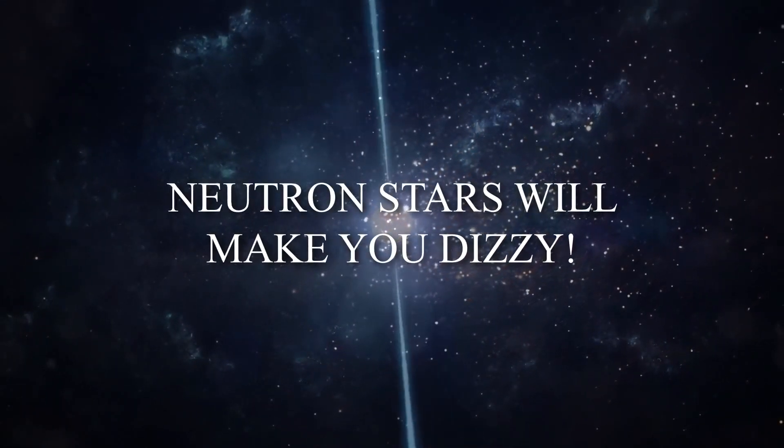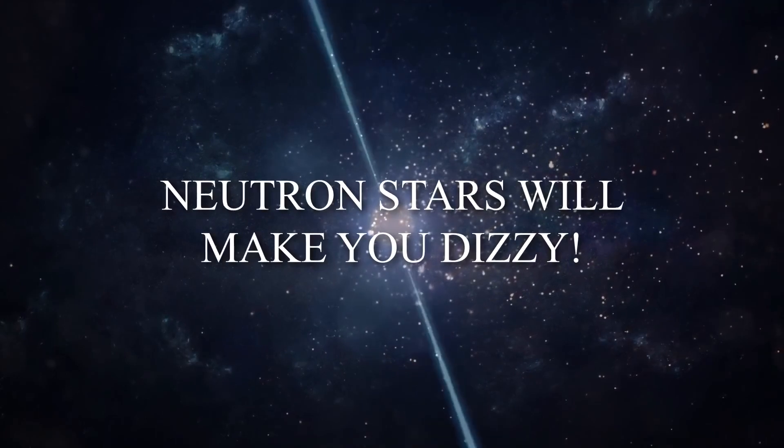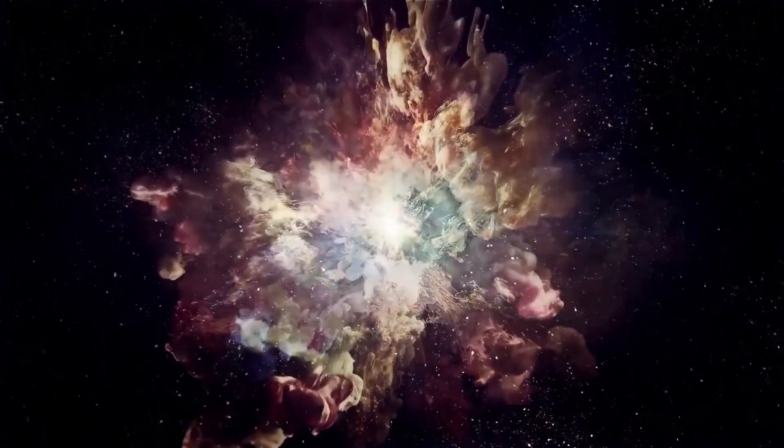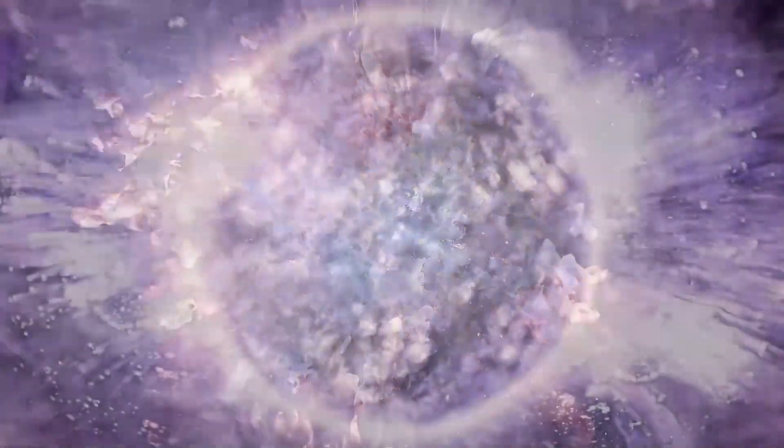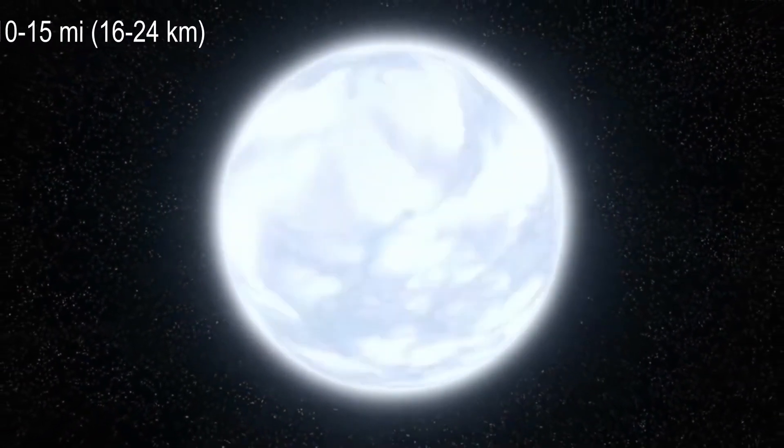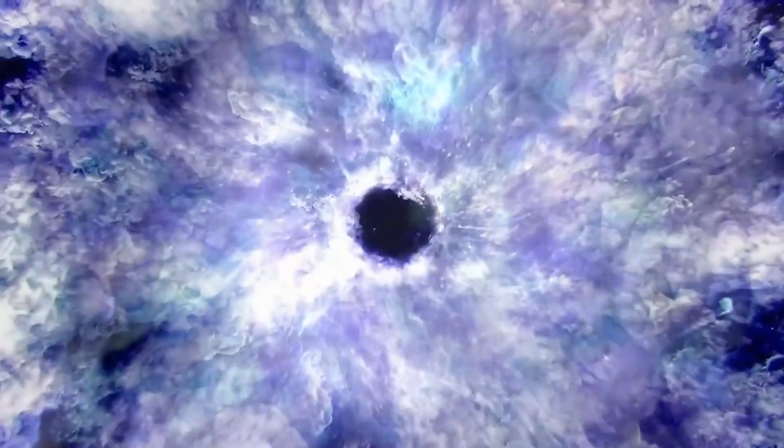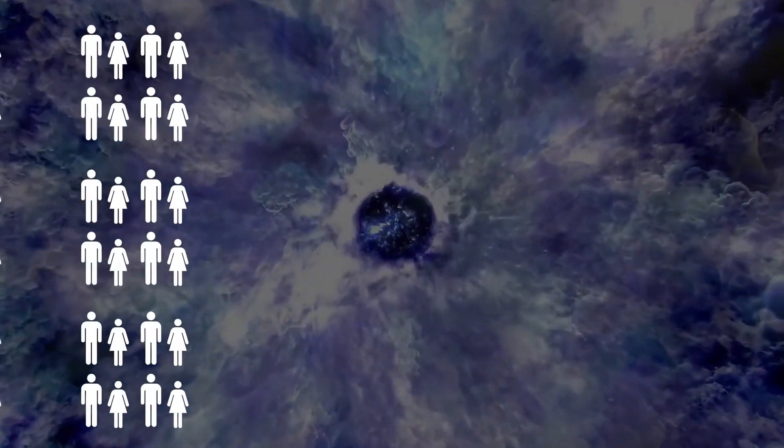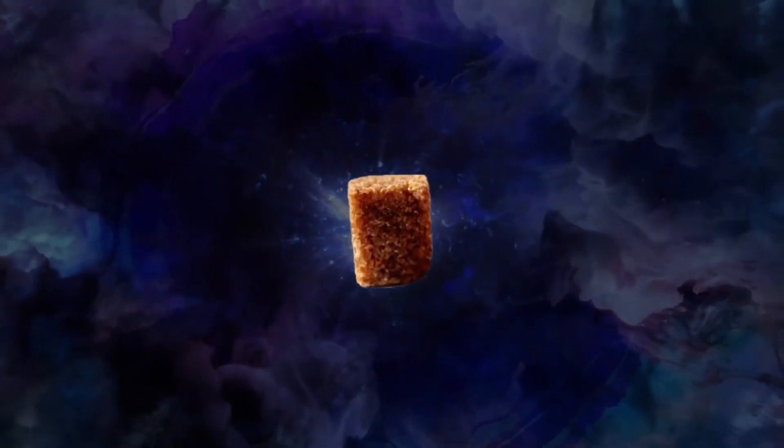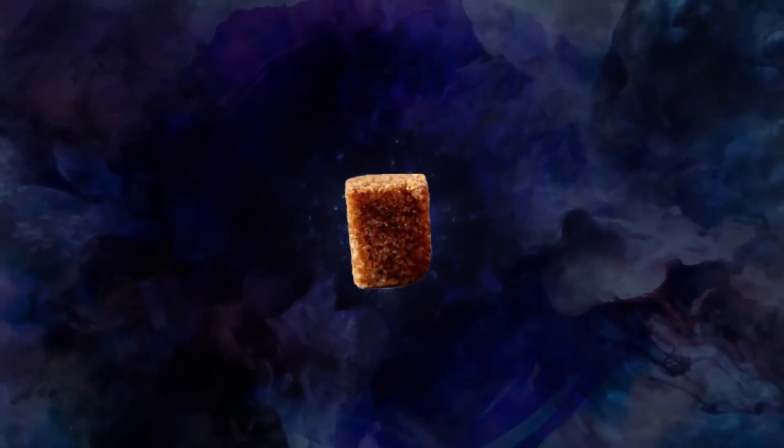Number three: Neutron stars will make you dizzy. These hyperactive oddities are the remnants of large stars that go supernova and then collapse into incredibly dense and little objects about 10 to 15 miles across. They're so dense, if you took every one of the 7.9 billion people on the planet and gave them the same density, we'd all fit into one sugar cube.